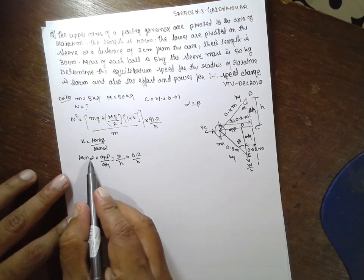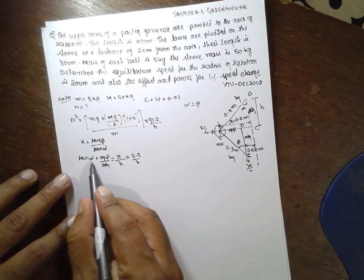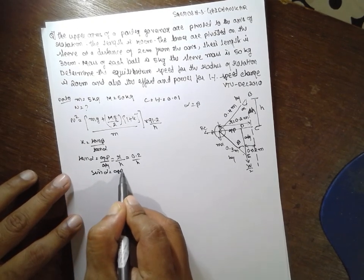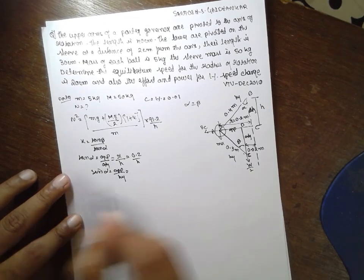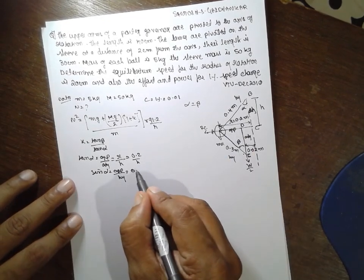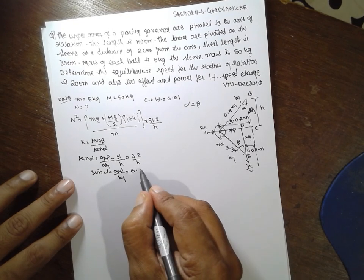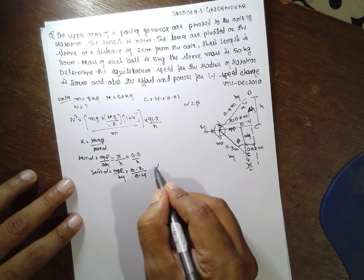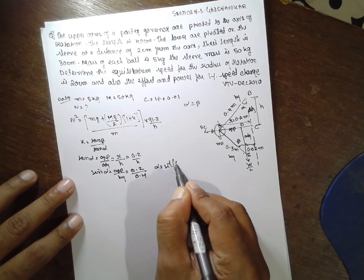Then find out sin alpha. Sin alpha is nothing but opposite by hypotenuse. What is opposite? 0.2 divided by hypotenuse is 0.4. Alpha is equal to sin inverse 0.2 divided by 0.4. The answer for this one is 30.